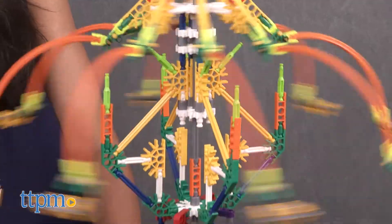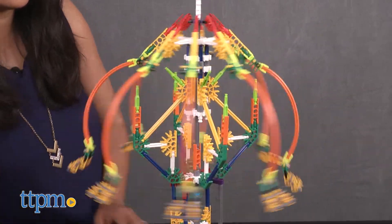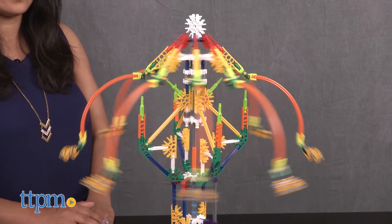The Kinect STEM Exploration Swing Ride Building Set requires two AA batteries that are not included. This is for ages 8 and up and made by Kinects.